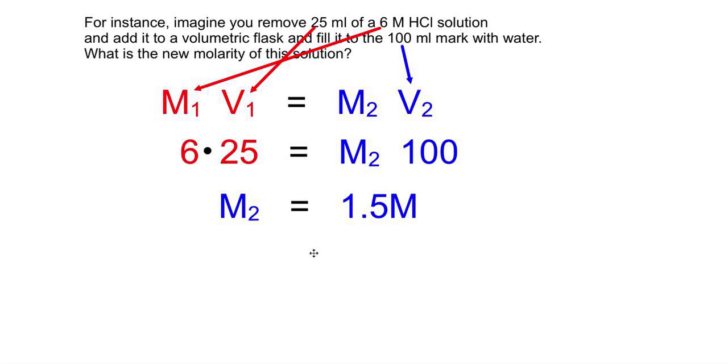So do some basic algebra here and the new molarity of our diluted solution is 1.5. So we started at 6 molar and we went down to 1.5. And we accomplished that by taking out 25 milliliters and adding it to about 75 milliliters of water.